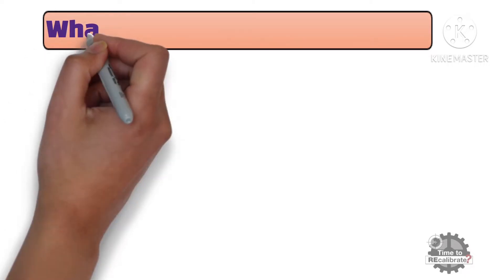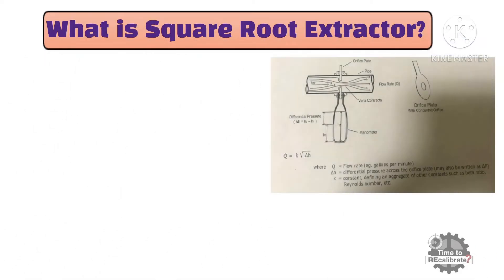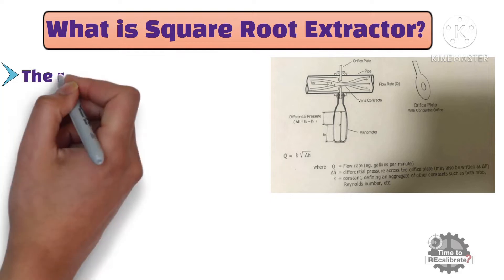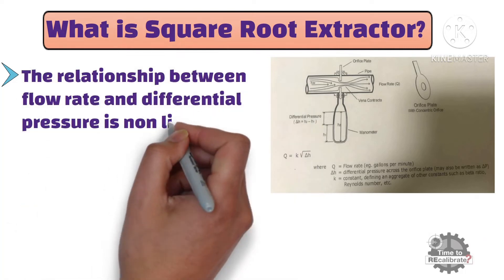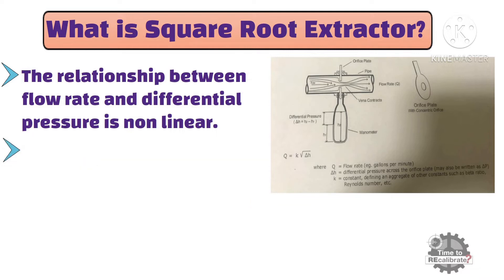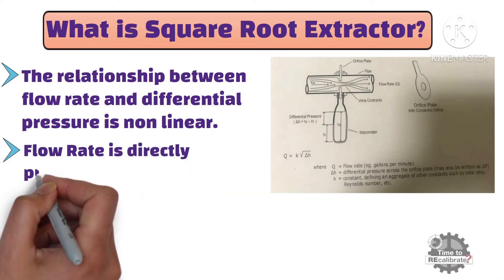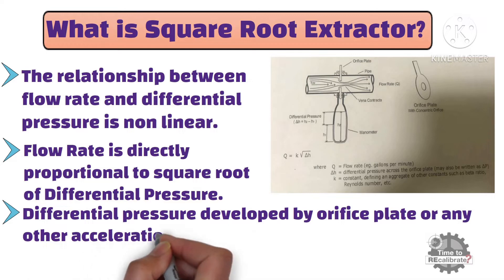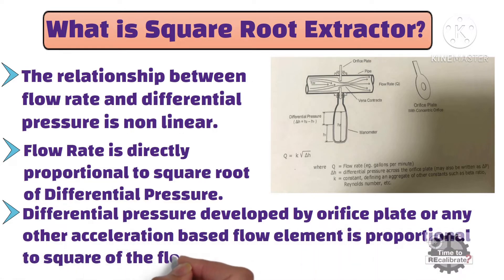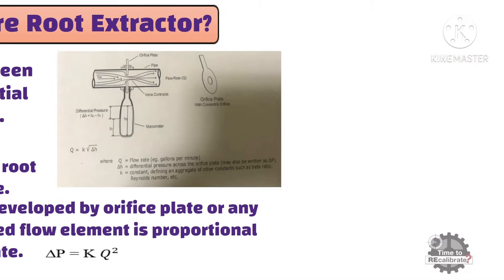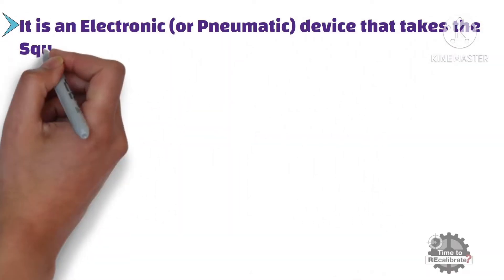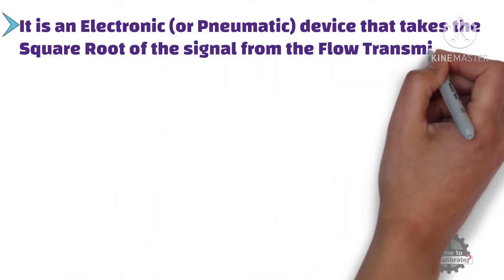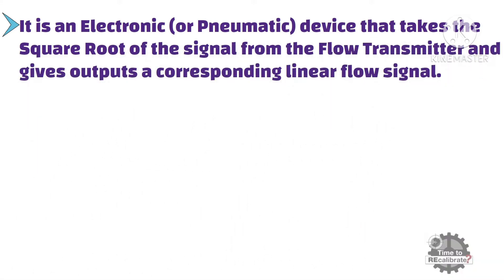First of all, what is a square root extractor? As we know, the relationship between flow rate and differential pressure is non-linear. In other words, flow rate is directly proportional to the square root of differential pressure. Or we can say that the differential pressure developed by an orifice plate or any other acceleration-based flow element is proportional to the square of the flow rate. So, a square root extractor is an electronic or pneumatic device that takes the square root of the signal from the flow transmitter and produces an output corresponding to a linear flow signal.